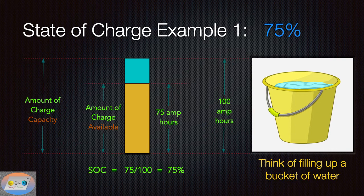So the state of charge is 75 divided by 100, or 75% state of charge. Again, we're always looking at the amount of charge capacity the battery has and the amount of charge available. And we take the amount of charge available and divide it by the amount of charge capacity. Again, this is an example for 75% state of charge. Let's move on to the next slide.